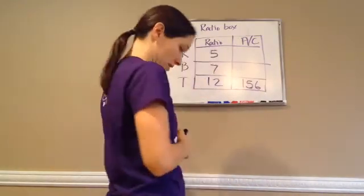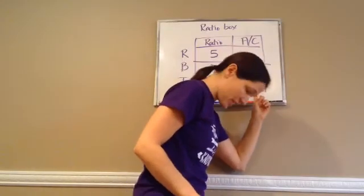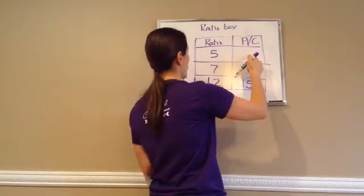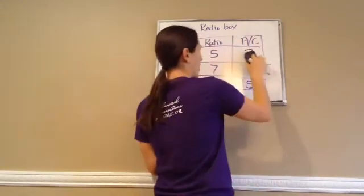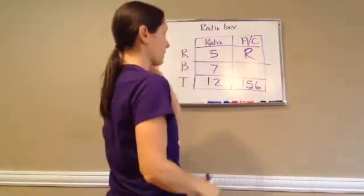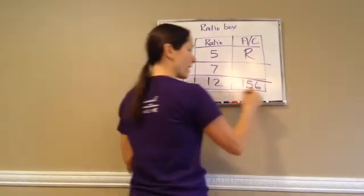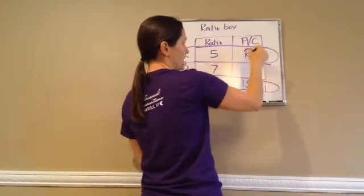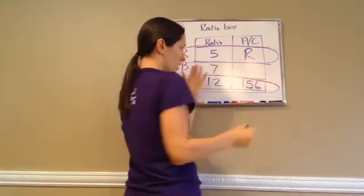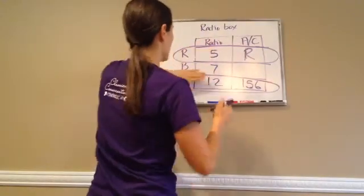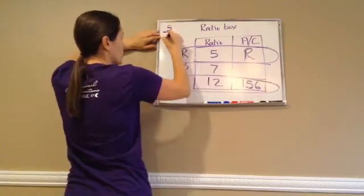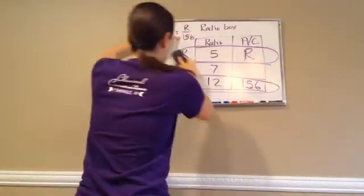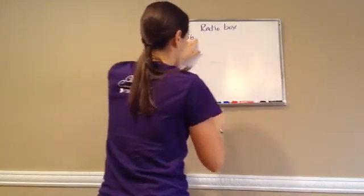The question asks how many marbles are red, so I put R in the actual count for red marbles. You take the column you know everything about — the total row — and set up a proportion using the row with the question. So: 5 over 12 equals R over 156. Then you cross multiply: 12 times R equals 156 times 5.